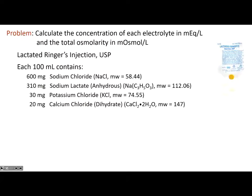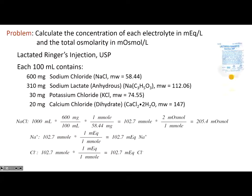Let's do the last, most involved question: Lactated Ringers solution. For every 100 mL, I give you the concentration of four ingredients: sodium chloride, sodium lactate, potassium chloride, and calcium chloride dihydrate. We want to calculate the overall tonicity — both milliequivalents per liter and milliosmoles per liter. These all work exactly the same way. Starting with 1,000 milliliters, the concentration of sodium chloride is 600 mg per 100 mL.